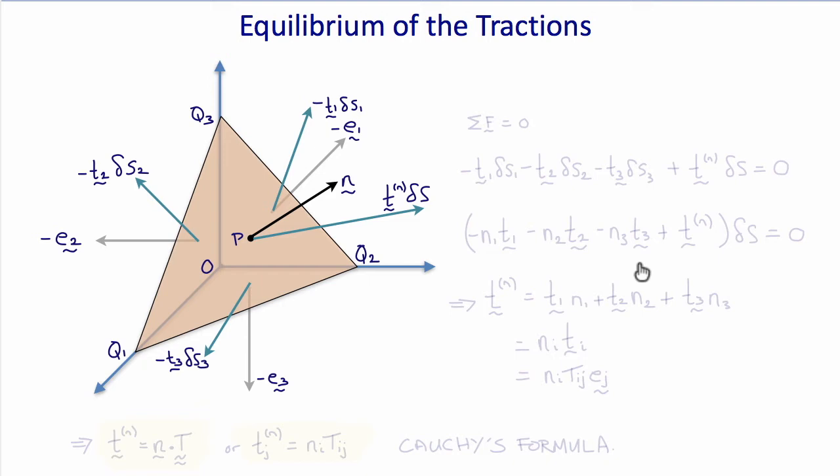So equilibrium says that the sum of the forces is zero, sigma f equals zero. So that means that minus t1 times delta s1 minus t2 times delta s2 minus t3 times delta s3 plus tn times delta s equals zero for the body in equilibrium.